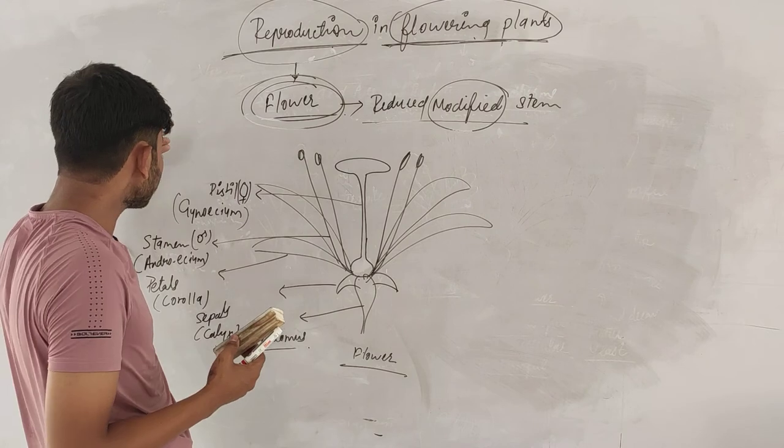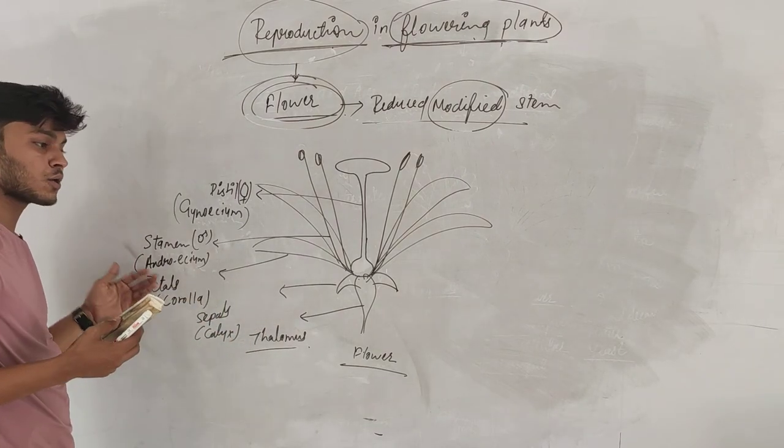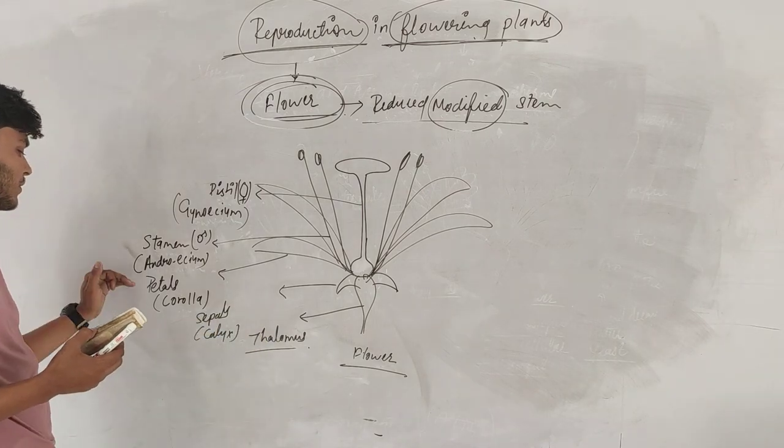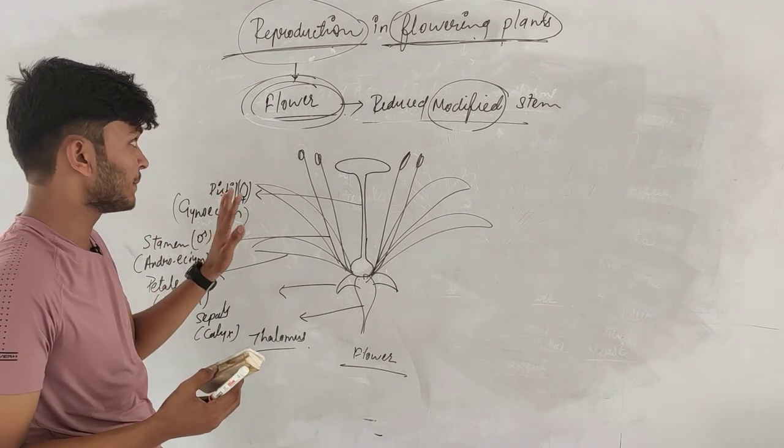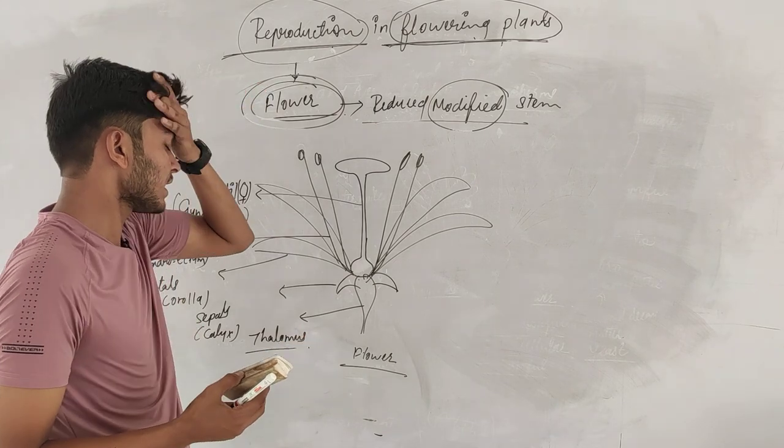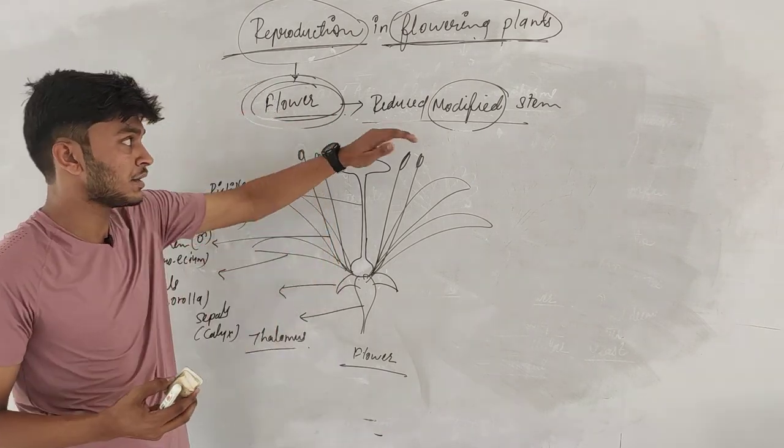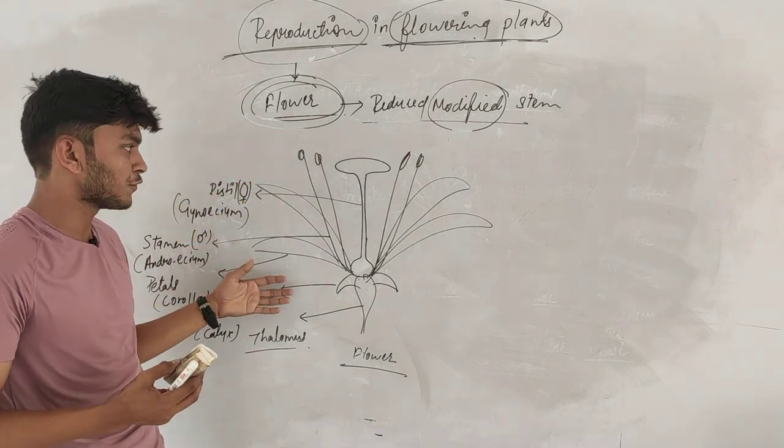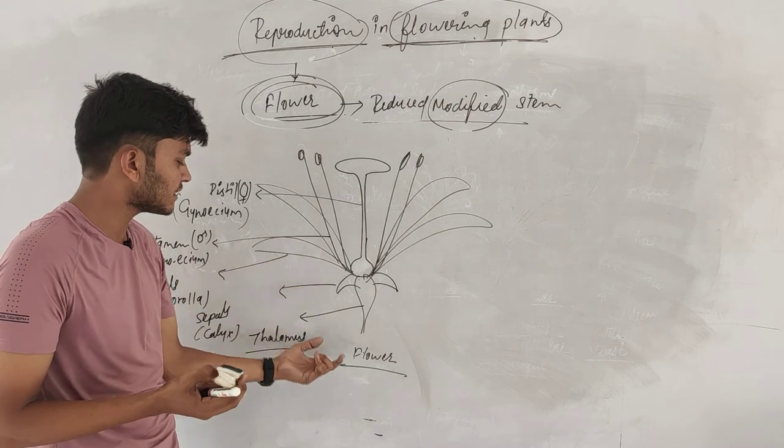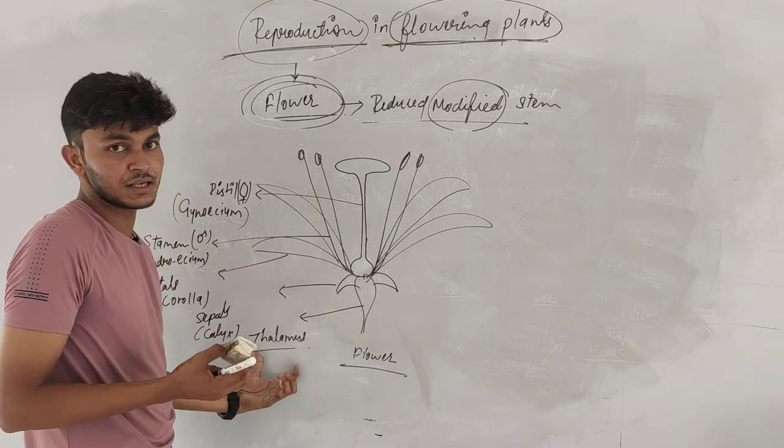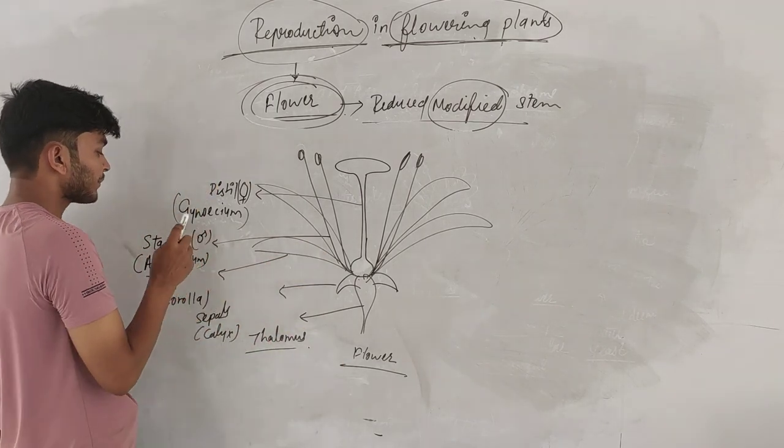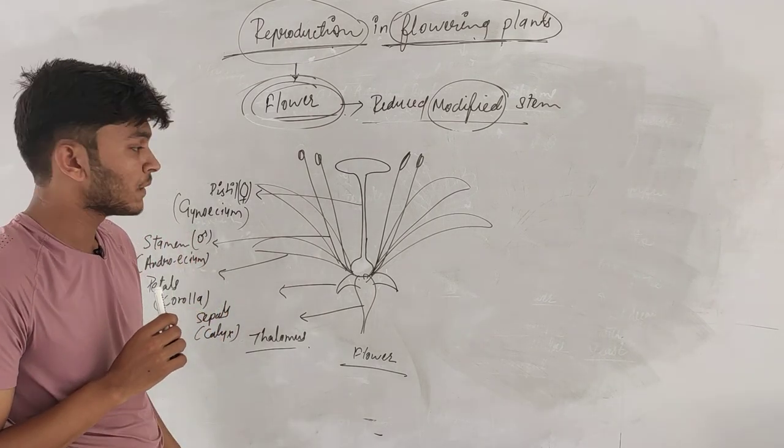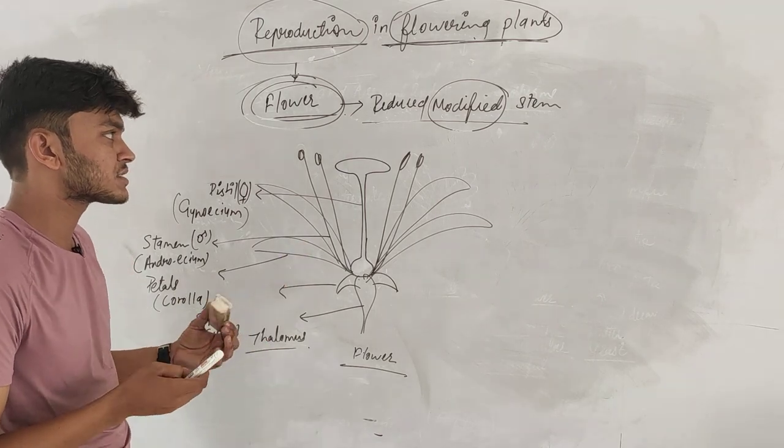We will talk about these whole four parts. I hope you will understand that the flower is the kind of modified structure or modified stem consists of four parts. Four parts are arranged in structure that structure is known as thalamus. In the next video we will talk about stamen, we will talk about stamen structure. Alright, I hope you have understood this structure. Thanks.